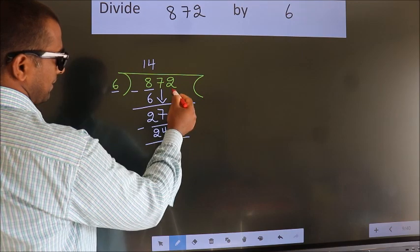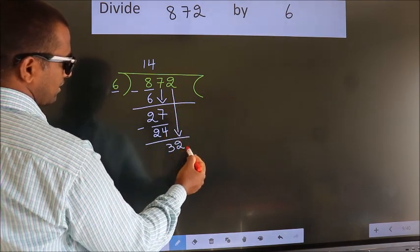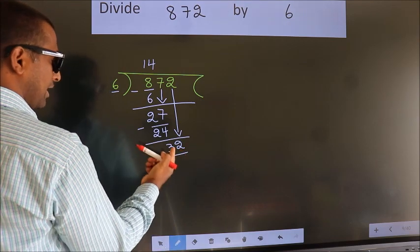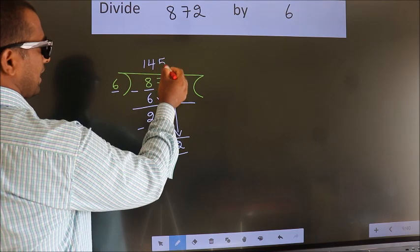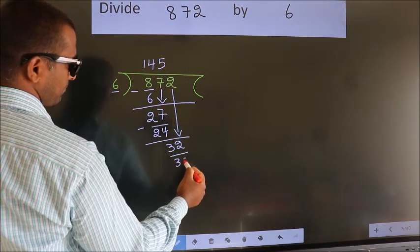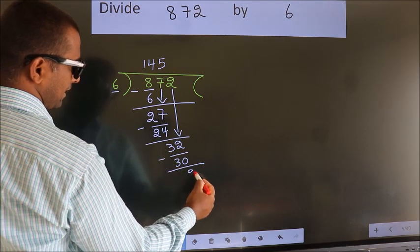After this, bring down the beside number. So 2 down. So 32. A number close to 32 in 6 table is 6 fives 30. Now we subtract. We get 2.